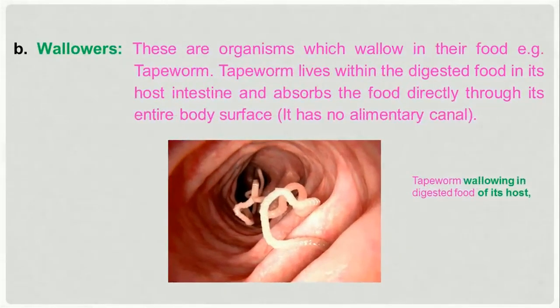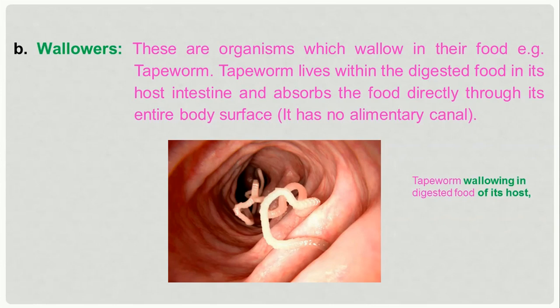The second type of fluid feeders are called wallowers. These are organisms which wallow in their food — in other words, they swim inside their food. A common example is the tapeworm. Tapeworm lives within the digested food in its host's intestine and absorbs food directly through its entire body surface. It has no alimentary canal — no mouth, no stomach, no intestine, nothing. It simply swims in the digested food of its host and the food passes straight into its body. Stressless, but very dangerous.